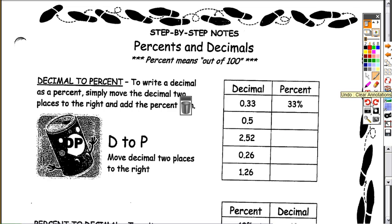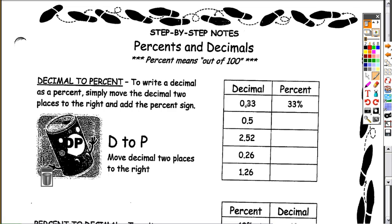To write a decimal as a percent, simply move the decimal two places to the right and add the percent sign. 33 hundredths becomes 33 percent. 5 tenths becomes 50 hundredths, which becomes 50 percent.